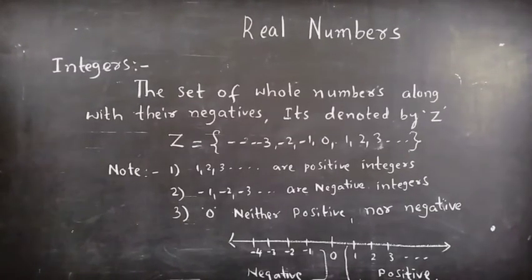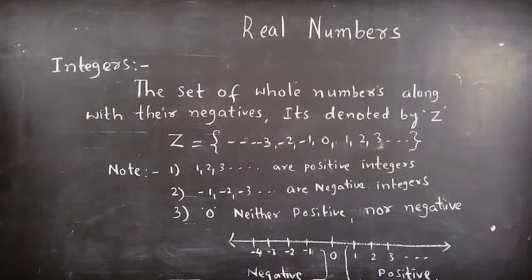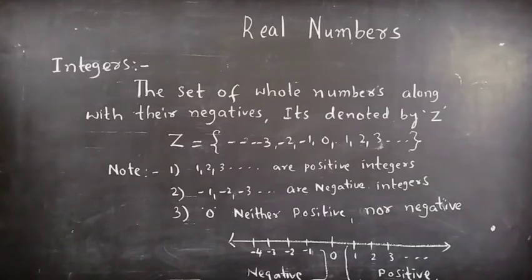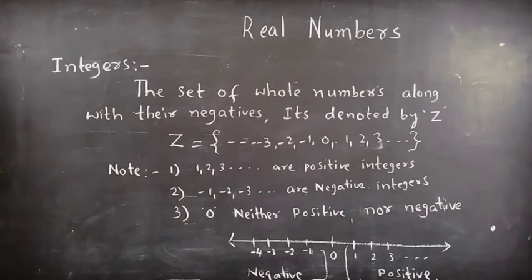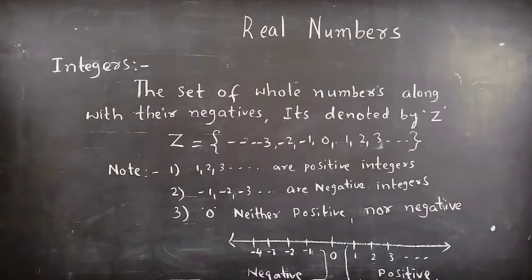Now about integers. Integers means the set of whole numbers along with the negatives. It is denoted by Z. Z = {negative natural numbers, 0, positive natural numbers}. Note: 1, 2, 3 are treated as positive integers and -1, -2, -3 are treated as negative integers. 0 is neither positive nor negative. If we plot on a number line, 0 is in the middle, right side are positive integers and left side negative integers.